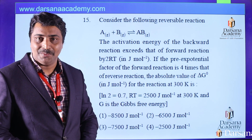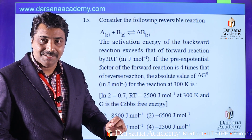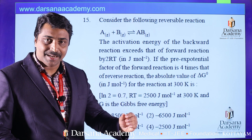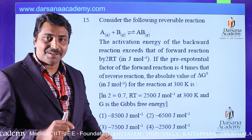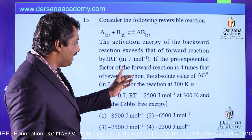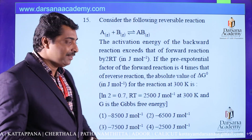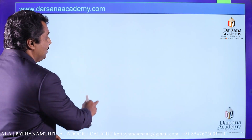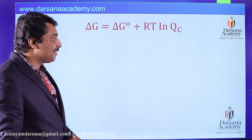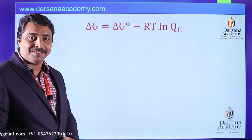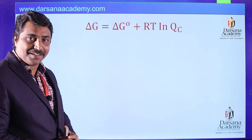From these two conditions we need to find the delta G zero value. The activation energy of the backward reaction exceeds that of the forward reaction by 2RT, and the Arrhenius constant for the forward reaction is four times that of the backward reaction. We know that delta G is equal to delta G zero plus RT times ln(QC).